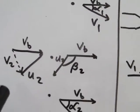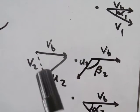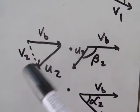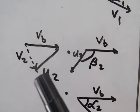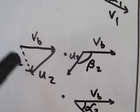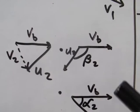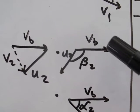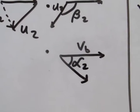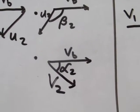Next is the outgoing water in the vane. vb goes to the right again, and u2 goes in its direction out of the vane. To get the absolute velocity, we connect the tail to the tip again — this is v2. The angle from vb to u2 is called beta, and the angle from vb to v2 is called alpha.